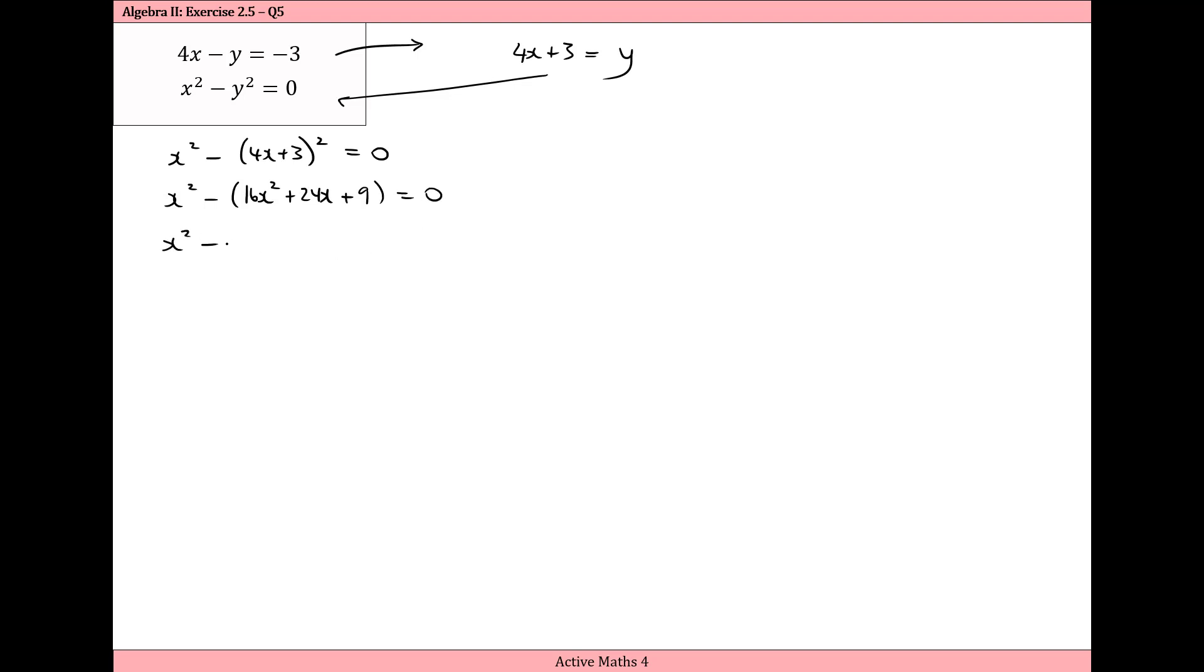So x squared minus 16x squared minus 24x minus 9. And because we changed the signs of all those terms, that's why it was needed just to have that big bracket and that's equal to 0. So we have minus 15x squared minus 24x minus 9 equals 0. And just to simplify the quadratic before we try and factorize it, I'm going to divide across by minus 3 and I get 5x squared plus 8x plus 3 equals 0.